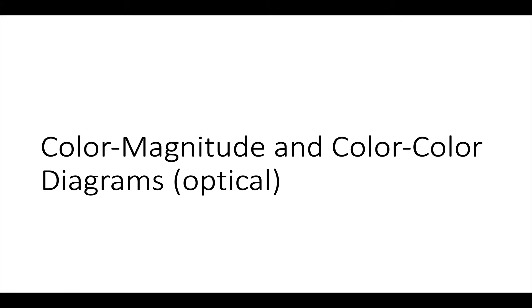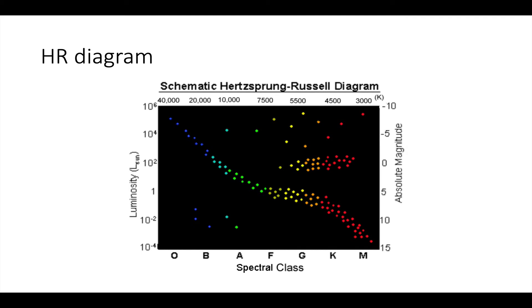Now we're going to cover color-magnitude and color-color diagrams. We're going to start with the optical. You probably have in your Astro 101 textbook a picture that looks something like this. This is an HR diagram or Hertzsprung-Russell diagram, and it is sort of a cartoon of it in that it's sort of stylized. The way that it's usually presented in your textbooks is they point out that luminosity is on the y-axis. You have bright at the top and faint at the bottom, and then you've got temperature across the x-axis. So hot on the left and cold on the right.